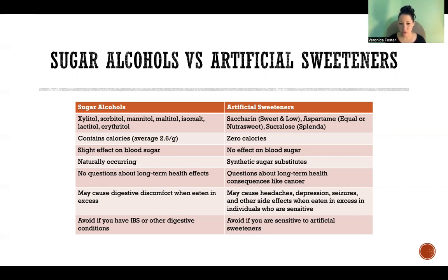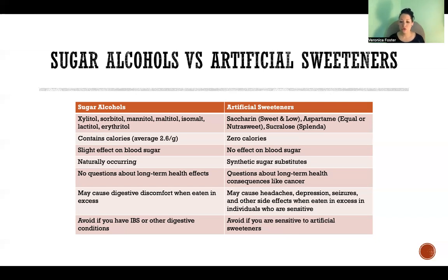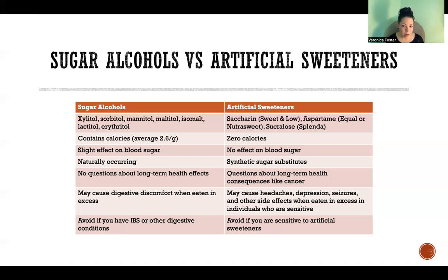Artificial sweeteners — we're referring to sweeteners like saccharin, which also goes by the name Sweet and Low; aspartame, which goes by Equal or NutraSweet; and sucralose, which goes by the name Splenda. Although they're used in similar ways to sweeten sugar-free products, they are entirely different things.